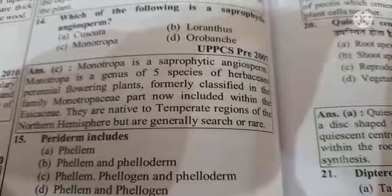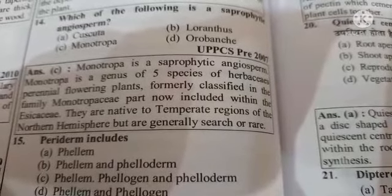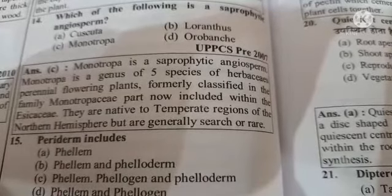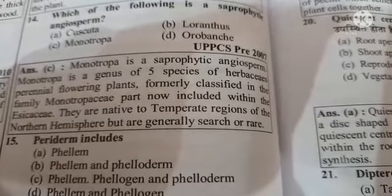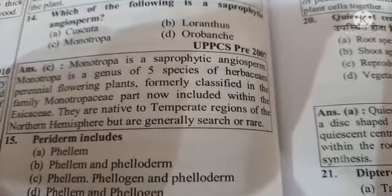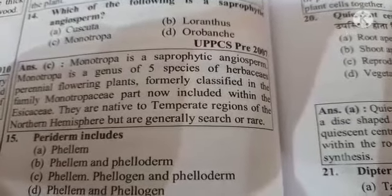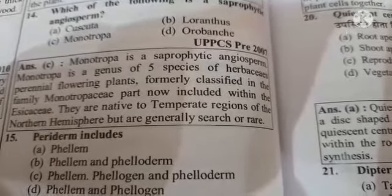Next question: periderm includes option A phellem only, option B phellem and phelloderm, option C phellem, phellogen and phelloderm, option D phellem and phellogen. The answer is option C, phellem, phellogen and phelloderm.